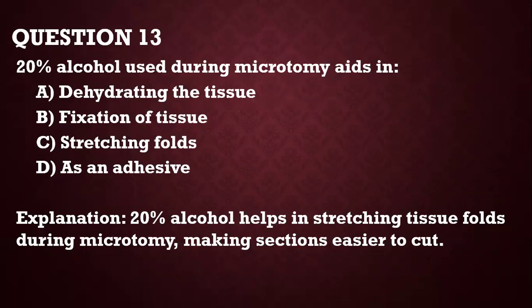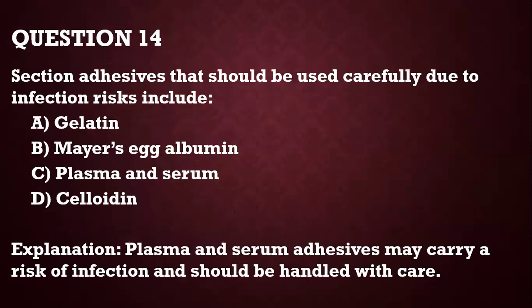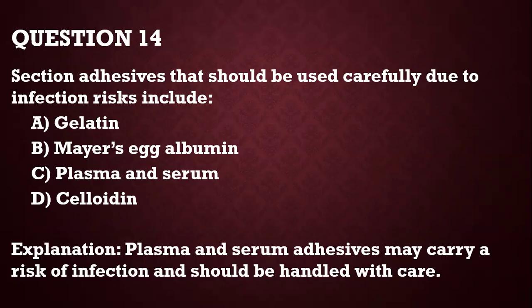Question number 13: 20% alcohol used during microtomy — is it for dehydrating tissue, fixation of tissues, or stretching folds as an adhesive? It is actually used to stretch folds to make microtomy easier. Question number 14: section adhesives that should be used carefully due to infection risk include plasma and serum, because of blood-borne infections like HIV and hepatitis.